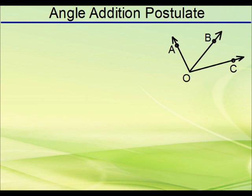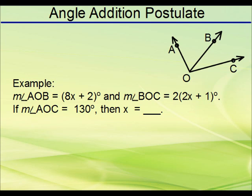How about we do one last one. So, you're given angle AOB being 8X plus 2, BOC being 2 times 2X plus 1, and you're given AOC. So, solve for X. Just as before, let's go ahead and write in our angle all the different values that we know. So, we have AOB being 8X plus 2. We have BOC being 2 times 2X plus 1, and we know the whole thing is 130 degrees. That's angle AOC.